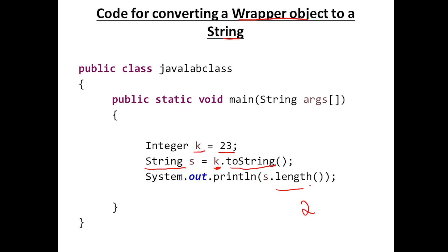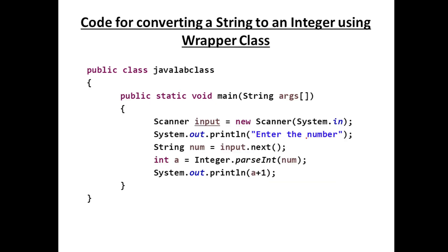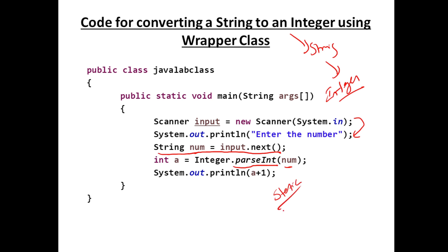You can also convert a String to an integer. If the user enters a number, you receive it as a string: 'String num = input.nextLine()'. To parse it, use 'int a = Integer.parseInt(num)'. 'parseInt' is a static method inside the Integer class, invoked using the class name. So if the user enters 2, 'a + 2' will give 4 because it's been converted to an integer.